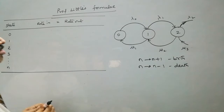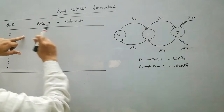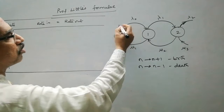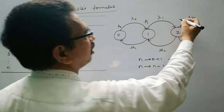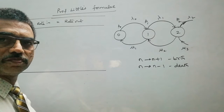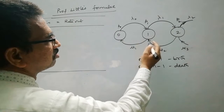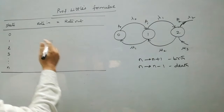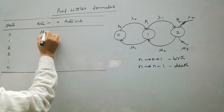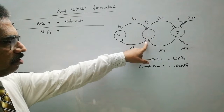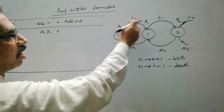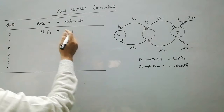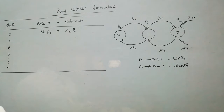Suppose the system is in state 0. From state 0 it will go to state 1, so rate out is λ₀. Let P₀ be the probability that the system is in state 0, P₁ the probability the system is in state 1, P₂ the probability the system is in state 2, and so on. The rate at which the system enters state 0: suppose the system is in state 1, with a service completion it will reach state 0, so with parameter μ₁ the rate in is μ₁P₁. This equals rate out, which is λ₀P₀. So for state 0: μ₁P₁ = λ₀P₀.